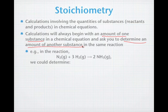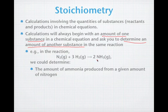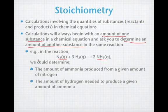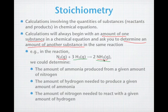For example, in the equation N2 gas plus 3H2 gas yields 2NH3, we could be asked to determine the amount of ammonia that's produced from a given amount of nitrogen. We could be asked to calculate the amount of hydrogen needed to produce a given amount of ammonia. We could be asked to determine the amount of nitrogen needed to react with a given amount of hydrogen, or essentially any combination of calculations involving reactants, products, or any combination of the two.